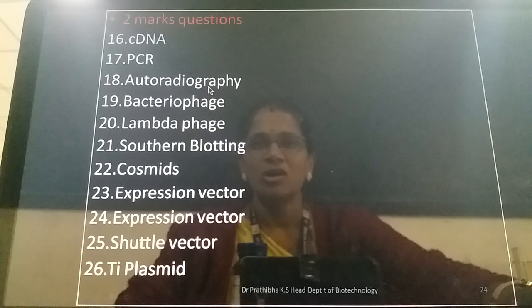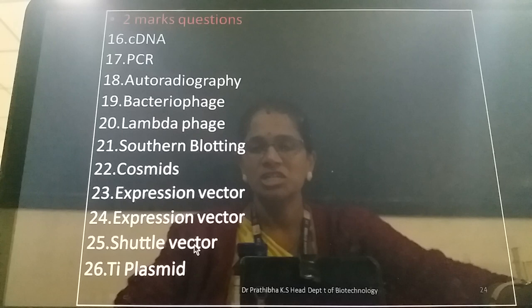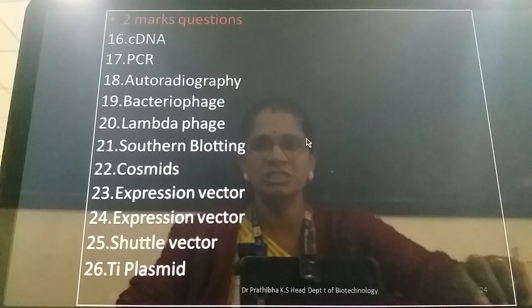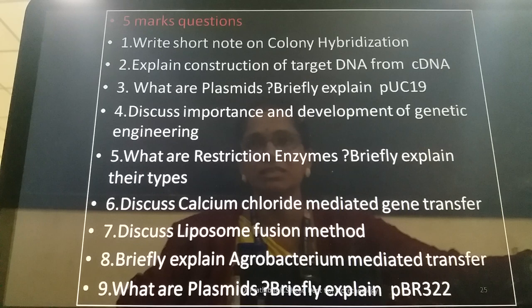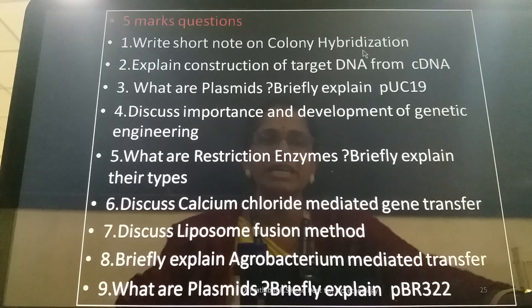Continuing with 2-mark questions: cDNA, PCR, autoradiography, bacteriophage or phage, lambda phage, southern blotting, cosmids, expression vector, shuttle vector, and Ti plasmid. These are the important 2-mark questions based on the classes we have covered. Now let us move on to 5-mark questions.